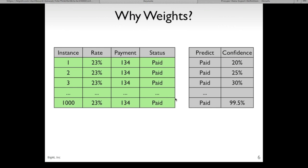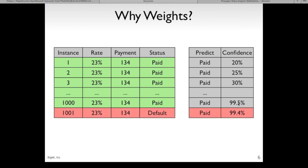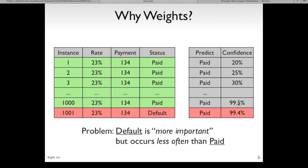If we had 1,000 such instances, we would still have the same predicted outcome but now the confidence might be very, very high. What happens if we add just one more instance with the same input features but the status is default? The model isn't going to change the predicted outcome because it only has one instance versus 1,000, but it would reduce the confidence slightly. The problem with reducing the confidence slightly is that when you're looking at a 99.4% confidence, you get a sense that there's no risk of default. The default is more important to us but occurs less often than paid — our intuition is that one case of default is more important than the 1,000 times that it was paid.